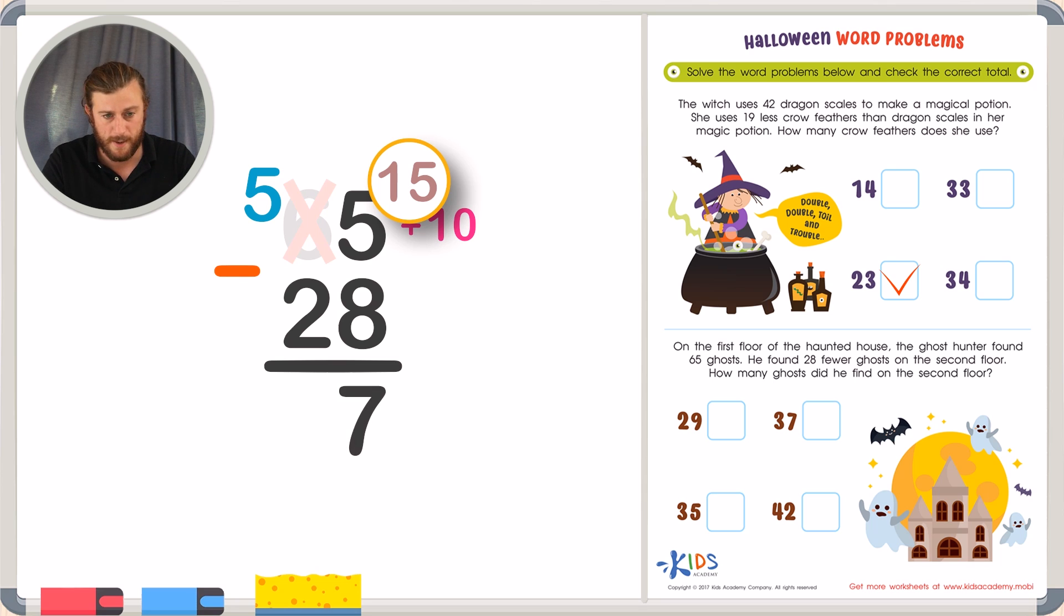And now we'll subtract the tens place. 5 minus 2. 2, 3, 4, 5. 5 minus 2 is 3, giving us an answer of 37.